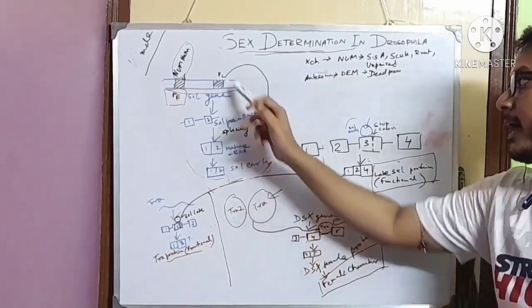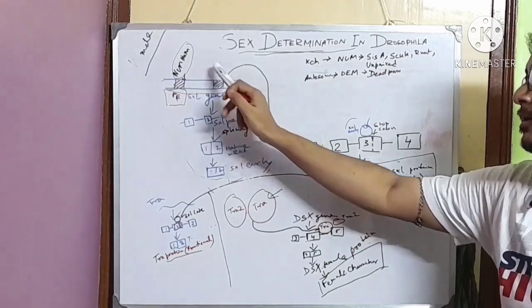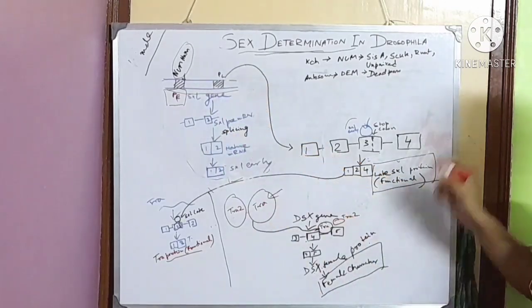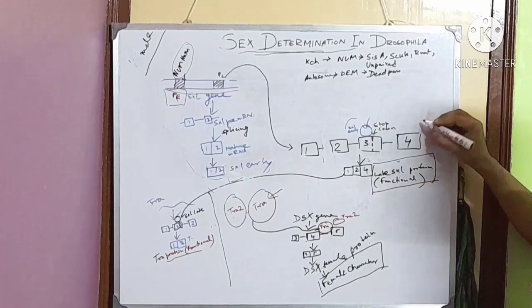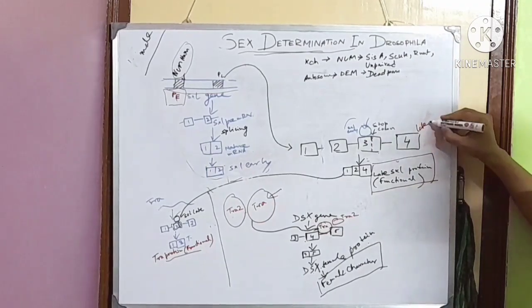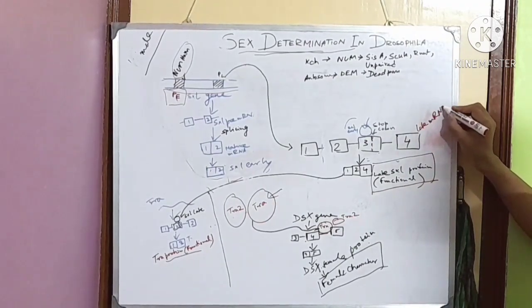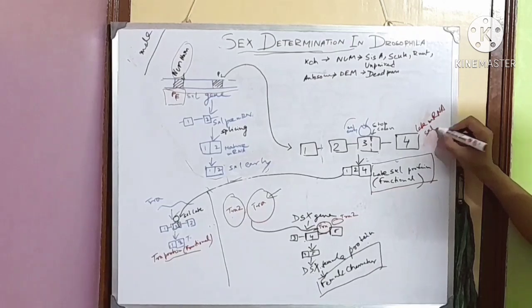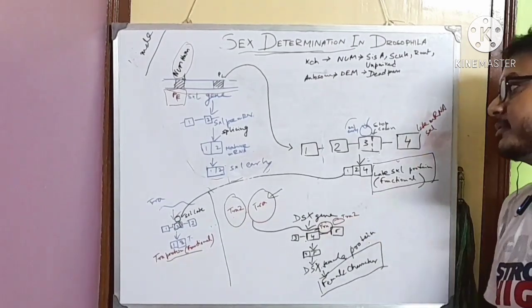But the promoter late is active. So late SXL mRNA will be produced. But as the functional SXL early protein is not produced, the functional SXL late protein will not be produced.